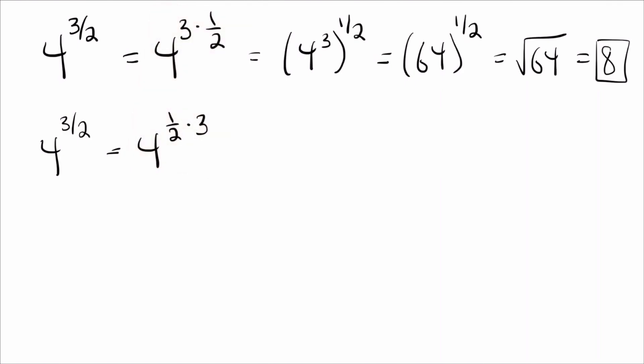So the question is, what does that change? Well, this means I have 4 to the 1 half power to the 3rd power. So now, 4 to the 1 half power means square root of 4. Square root of 4 is 2, and 2 cubed is 8. So of course, we get the same answer.